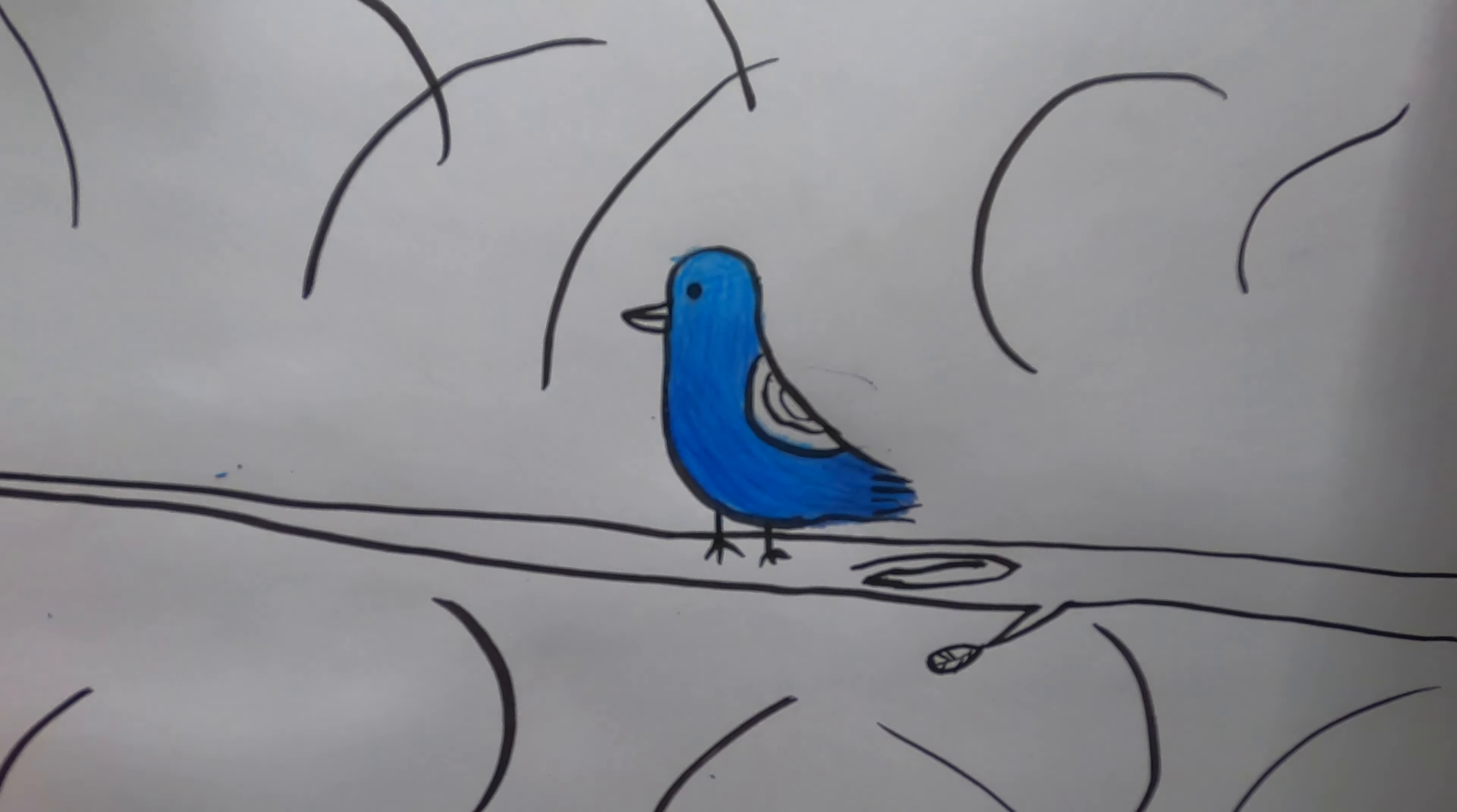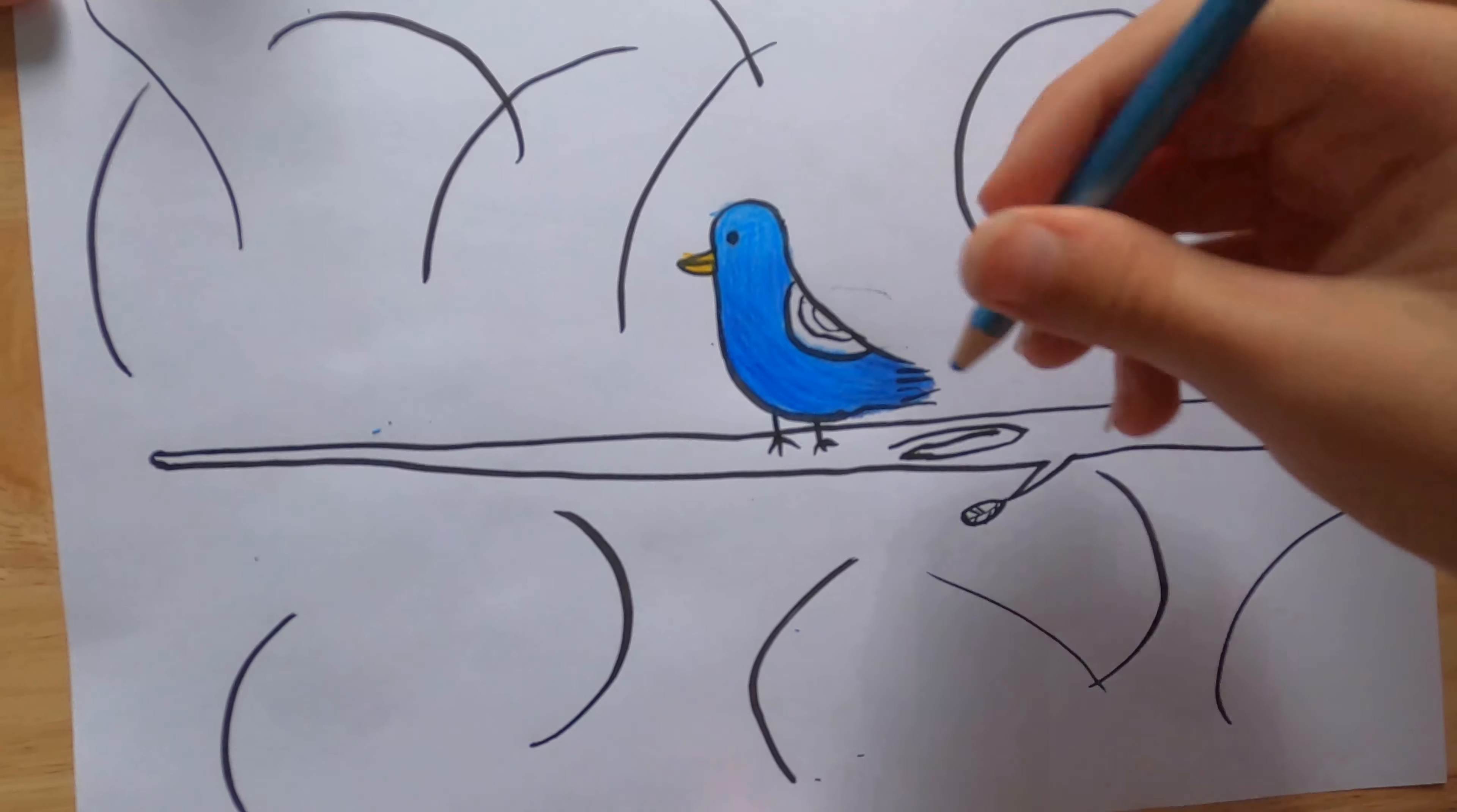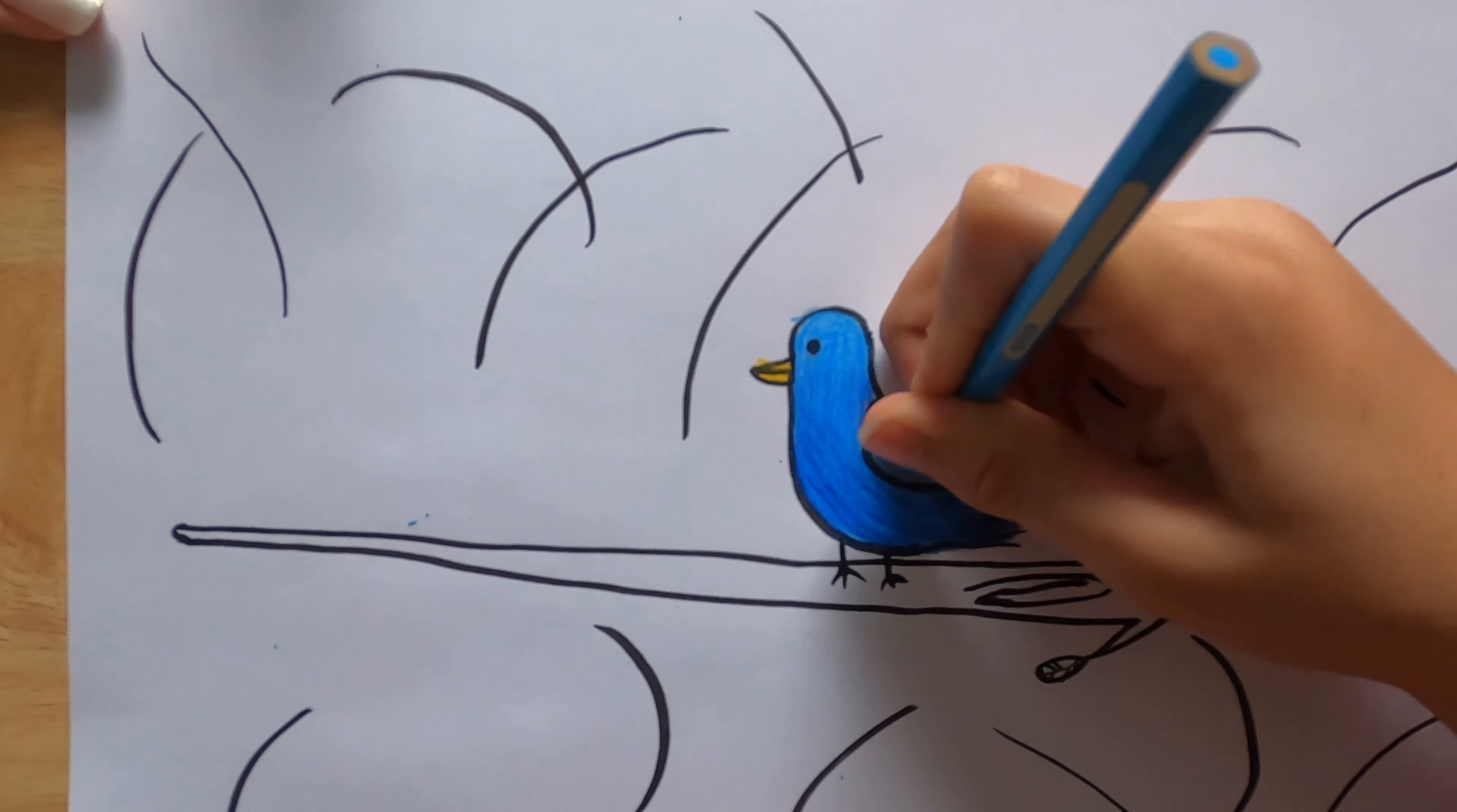Now we're going to move on to the beak. You need a nice orangey yellow and just color the beak. Now for the wings, you're going to need a nice sort of metallic color blue and just do one, two, leave the middle one empty. Now we've done that, fill that empty one with a very light blue, and then you've got a nice wing.